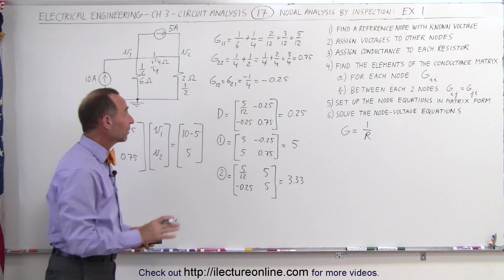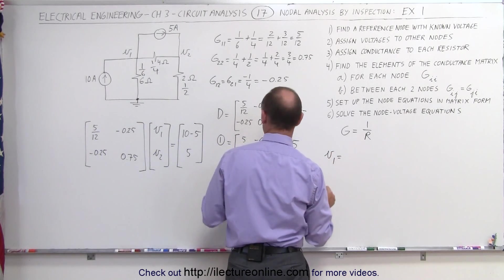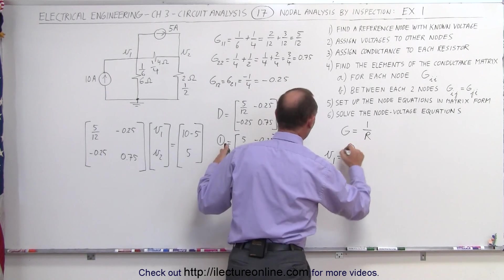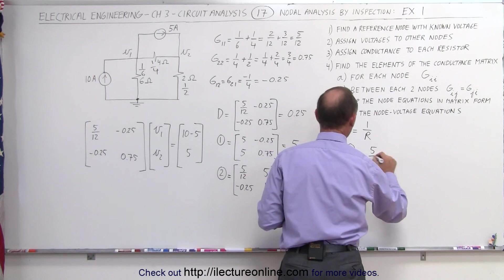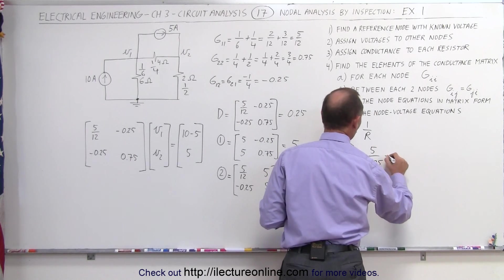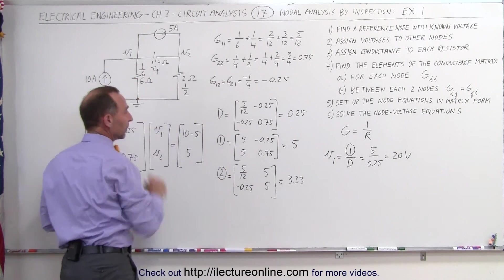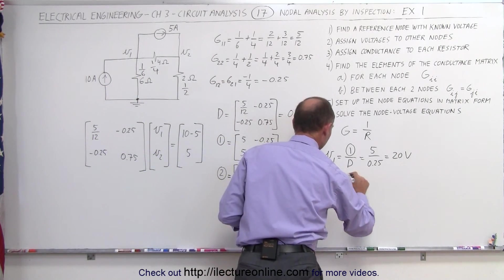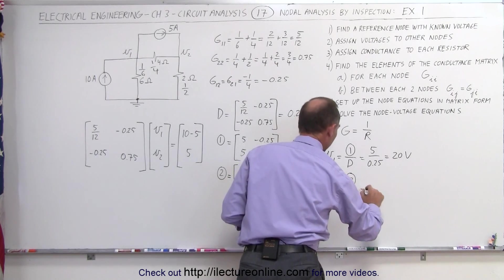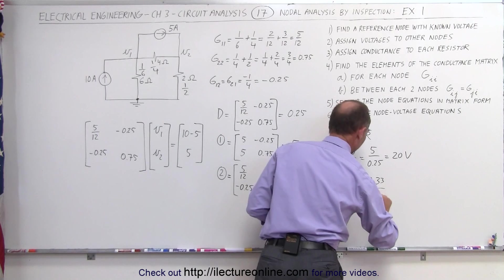Now all we have to do is to find the voltages. We can say that V1 is equal to the result of this matrix divided by the determinant. In this case, it would be 5 divided by 0.25, which is equal to 20 volts. That's the voltage at node 1.